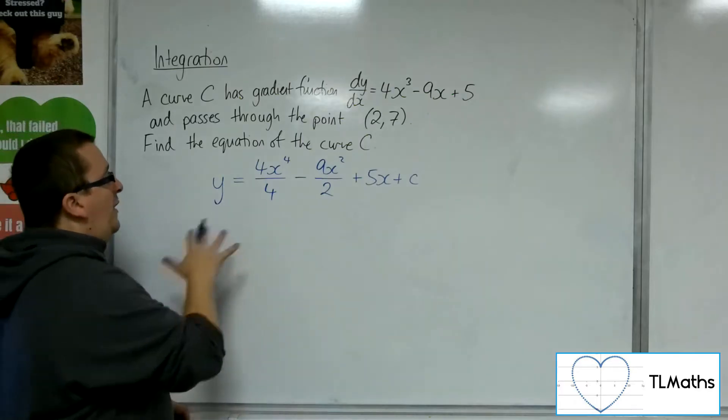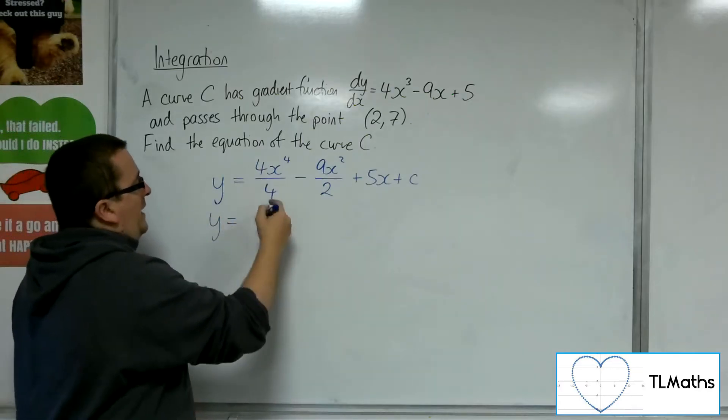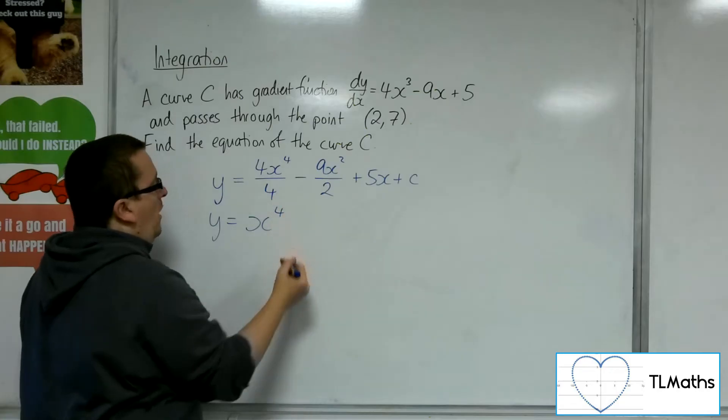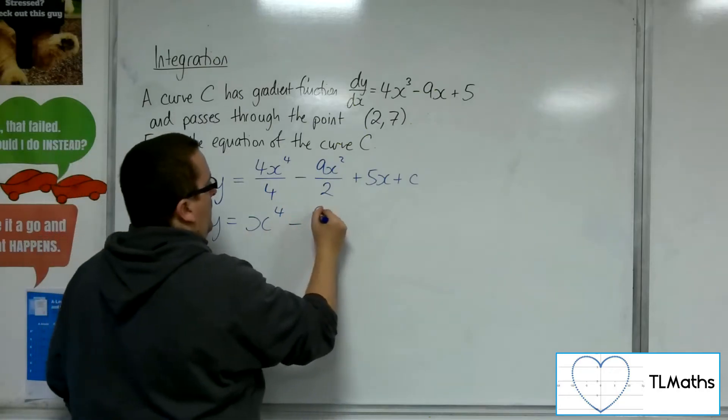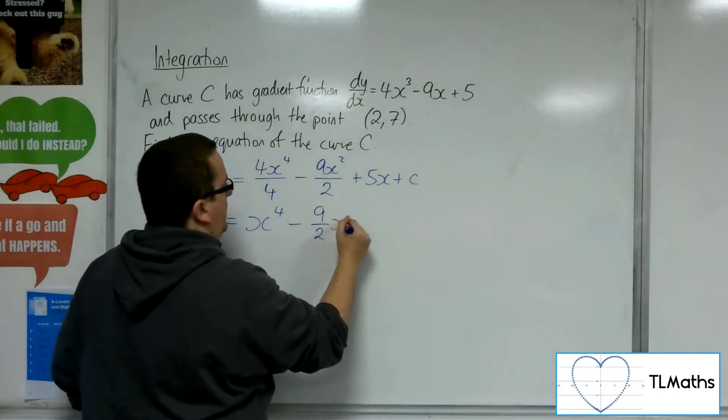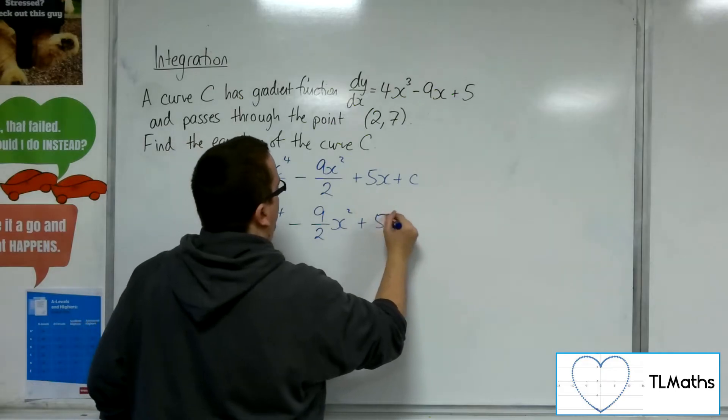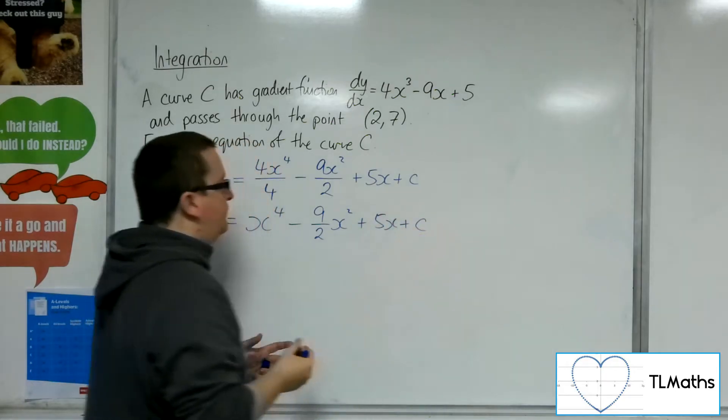So let's tidy this up first. The 4s cancel here and simplify to just 1. So x⁴ minus, and I'm going to write that as 9/2 x² plus 5x plus C.